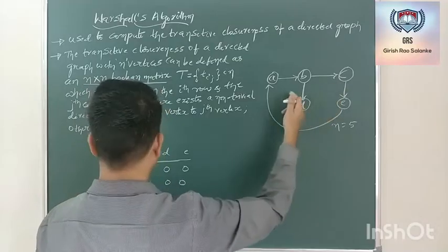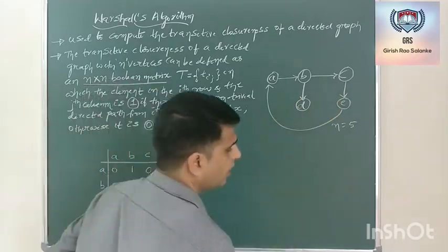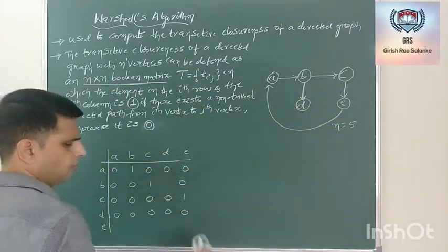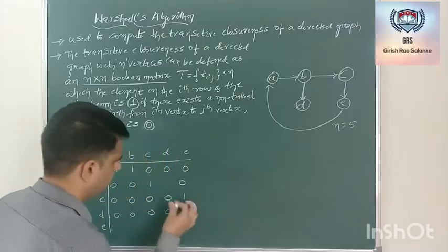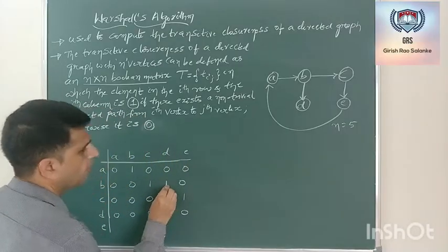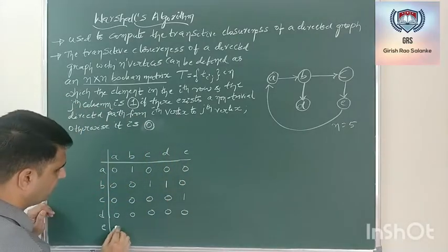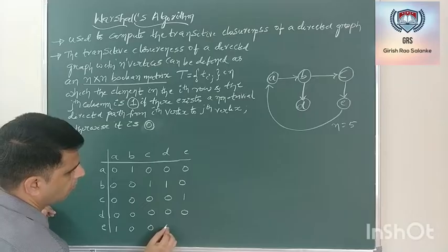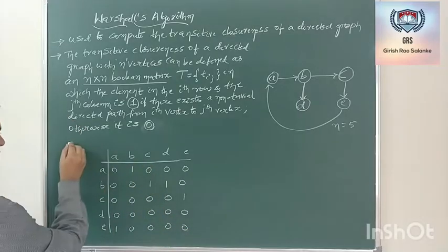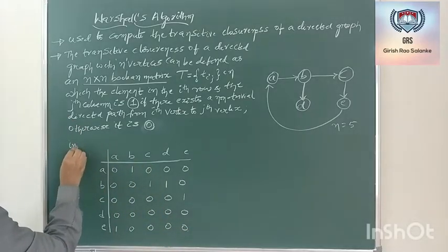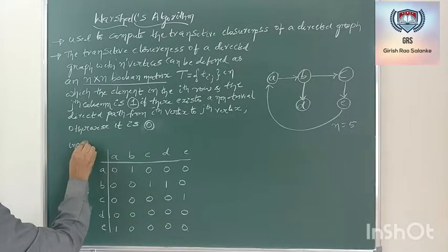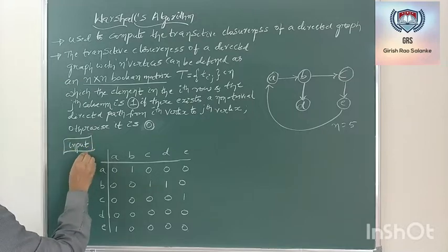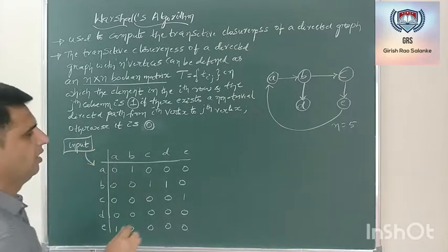Sorry — from B there are two edges: one edge is to C and one more edge is to D. And from E, there is an edge to A. This is the input for the Varshal algorithm.